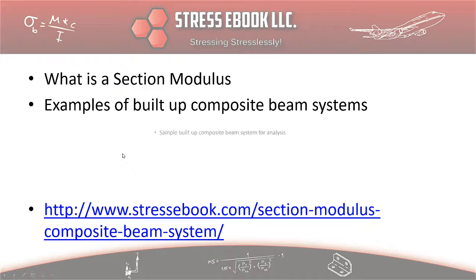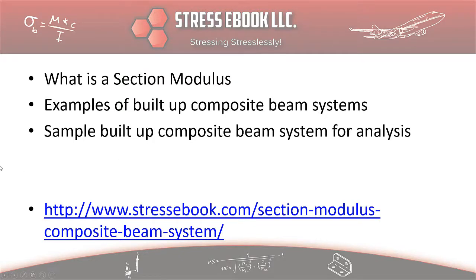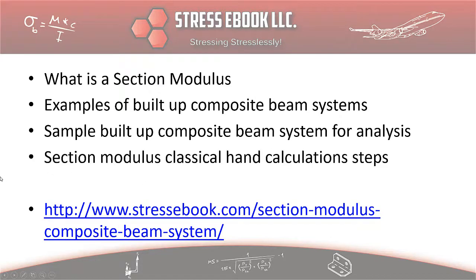We will look at a sample composite beam system which has those components, and it will be a doubly symmetric system. After that, we will go through step-by-step calculations of how to calculate the section modulus of this entire built-up beam system using classical hand calculation.